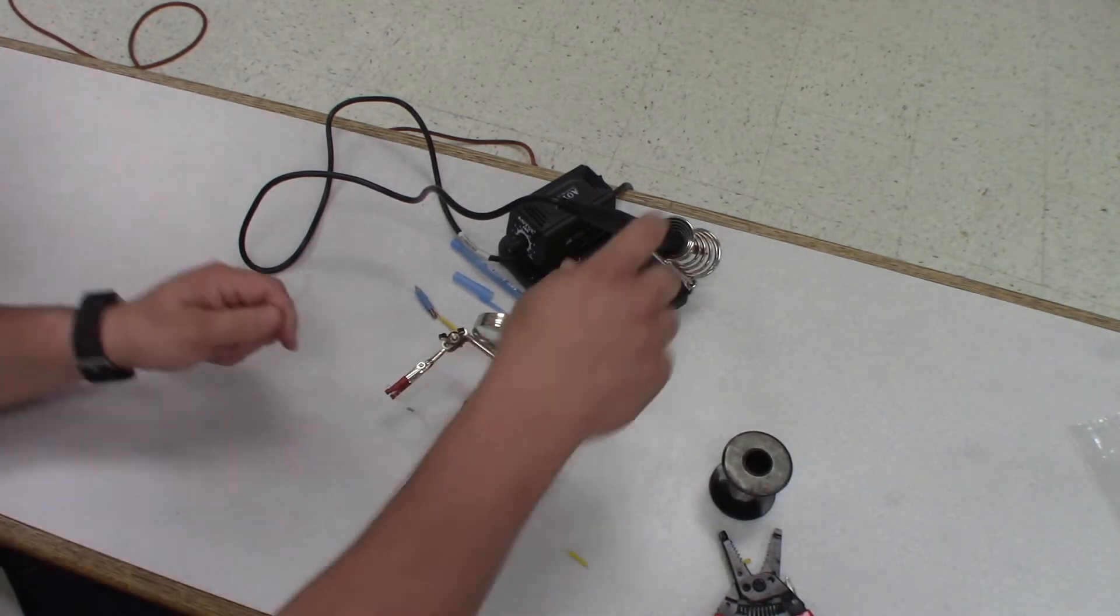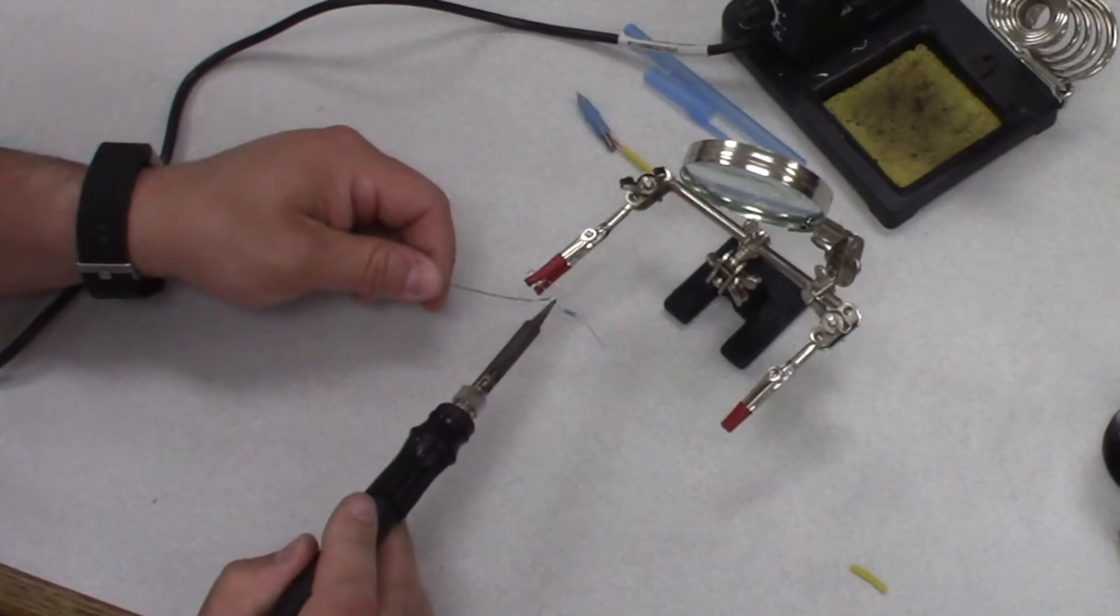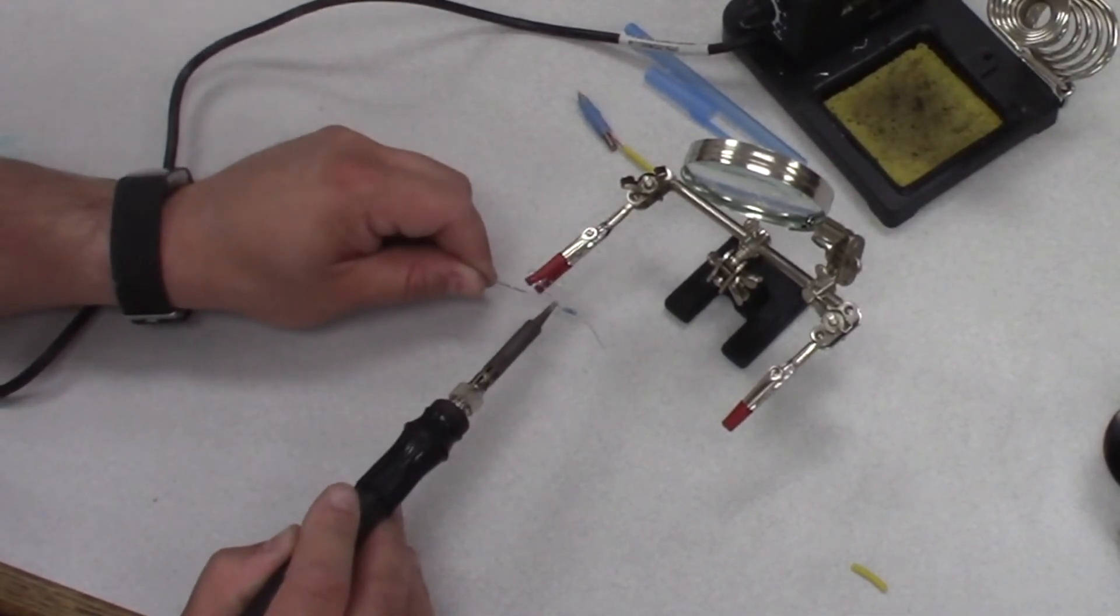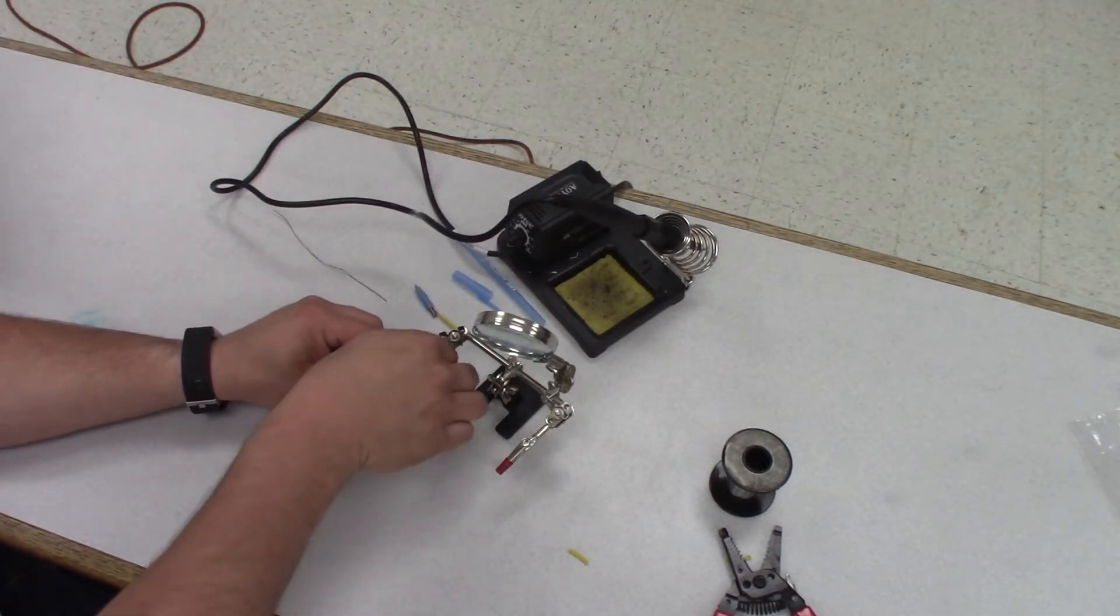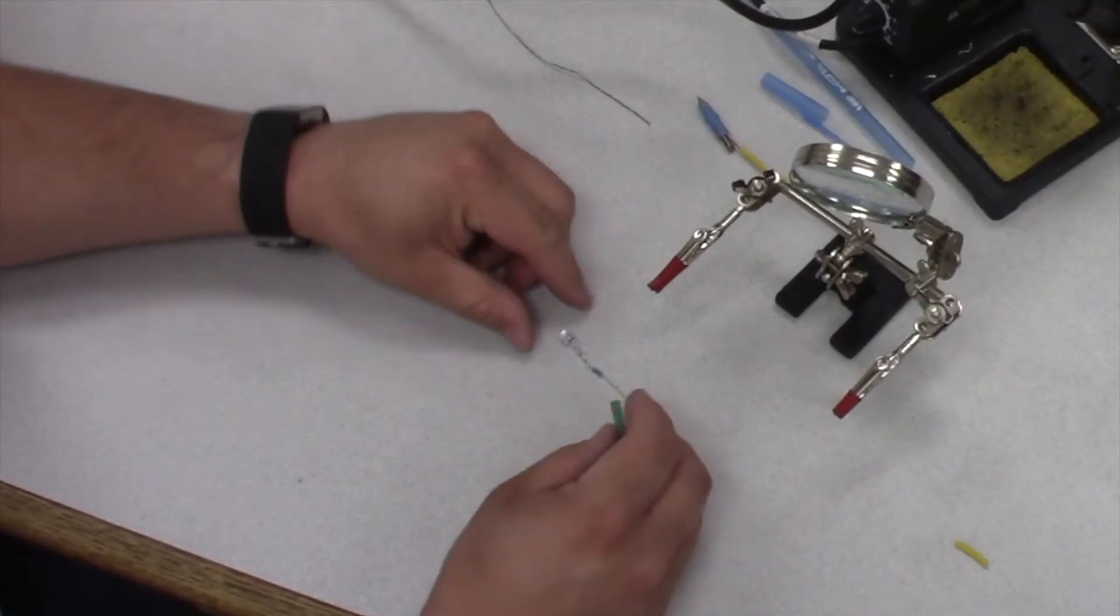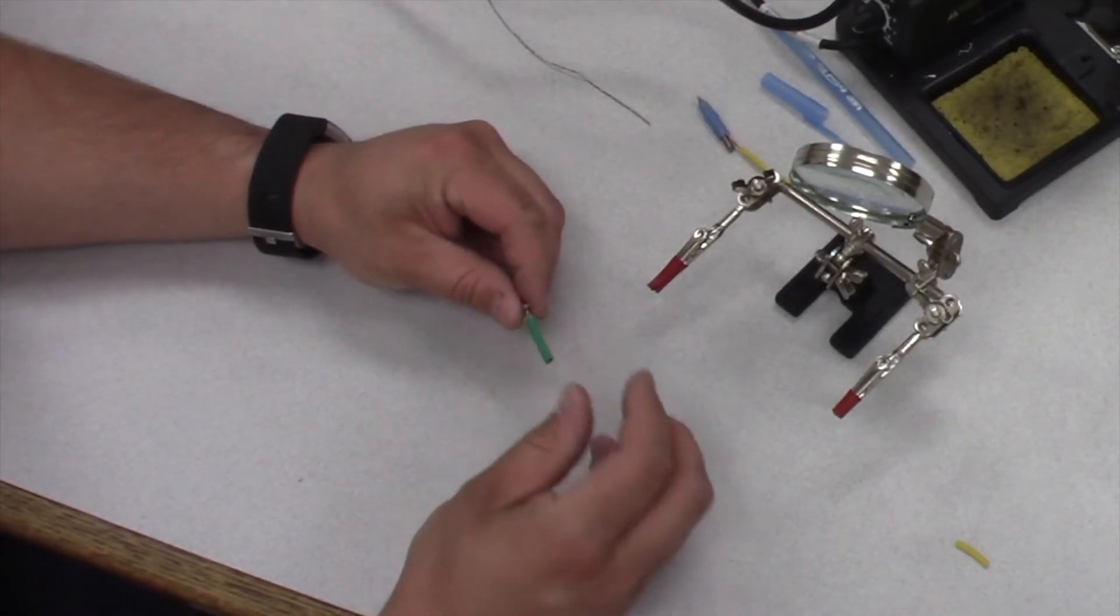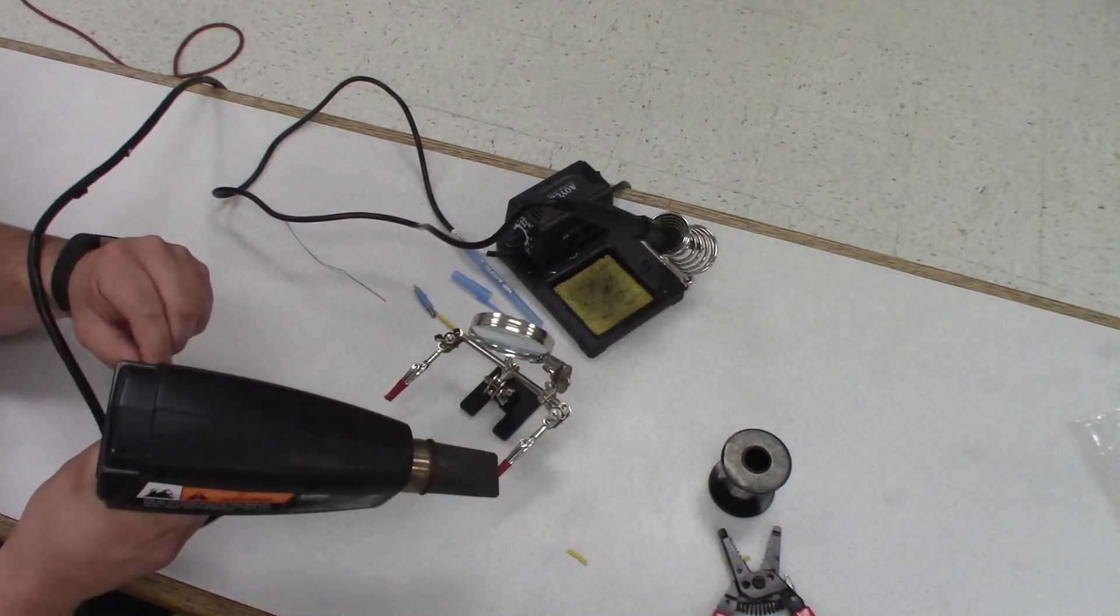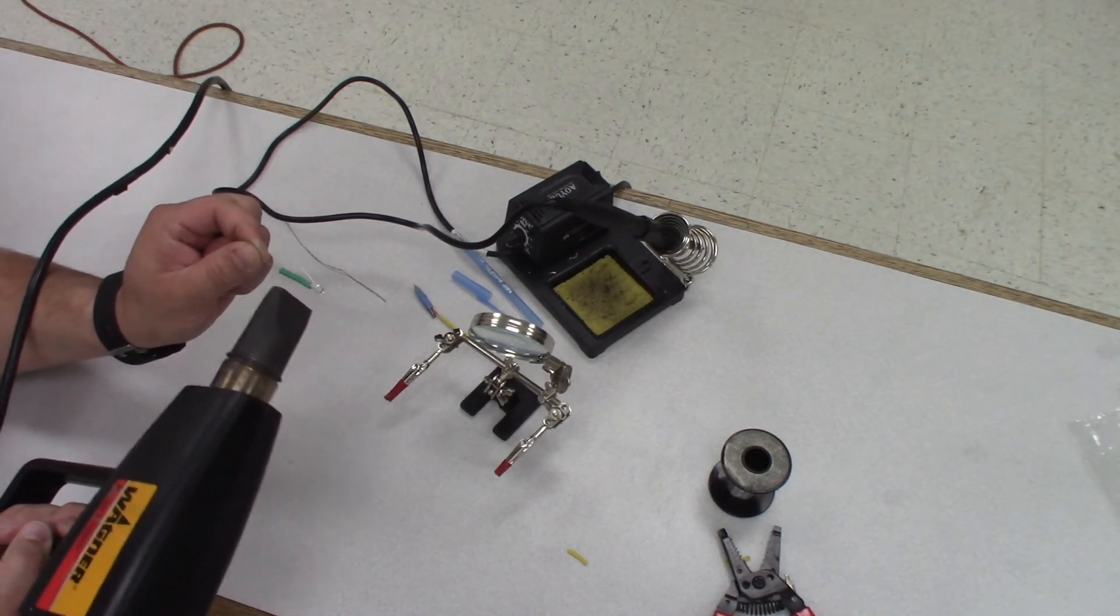So the resistor, the shorter end that you cut, goes on the positive side of the LED. Remember not to get too much heat into the LED because too much heat will actually burn it out. Next thing we're going to do is grab a piece of heat shrink tubing and put that over here so we don't create any kind of short circuits. Take our heat gun and heat this up, shrink it on there.